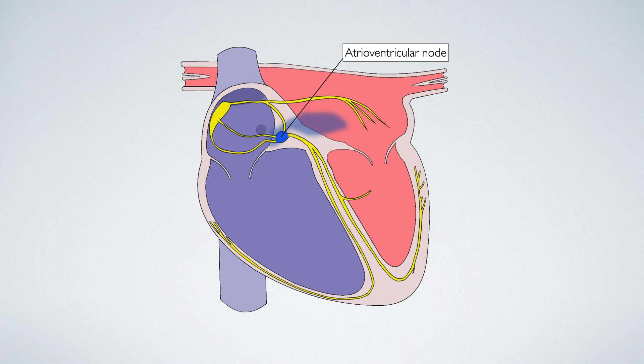The atrioventricular node is known as the gateway to the ventricles, controlling the number of impulses which are allowed through from the atria to the ventricular muscle. This pause does two things. It allows the ventricles time to fully fill with blood, but it also has the effect of stopping the heart rate from becoming excessively fast.